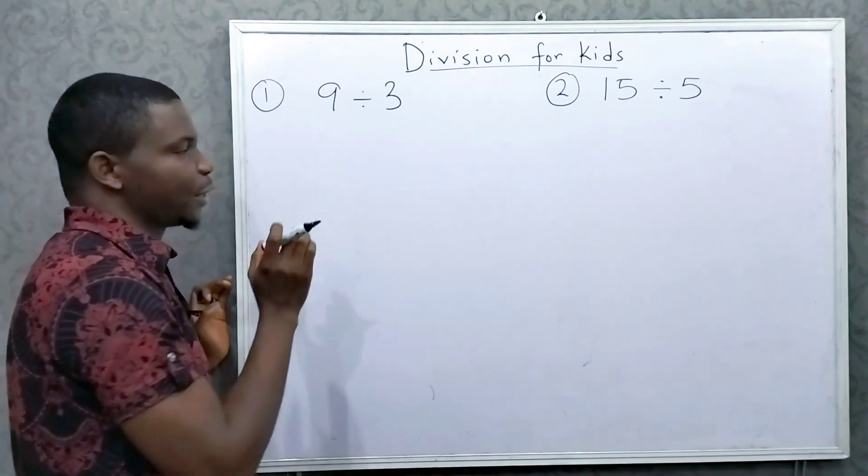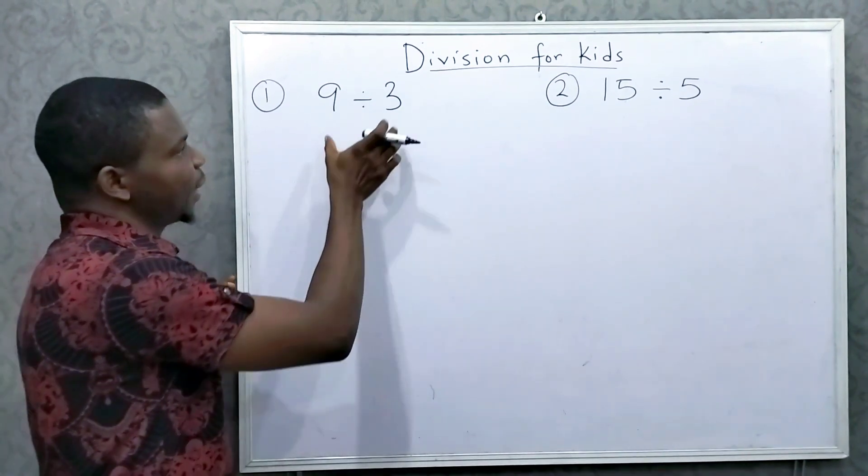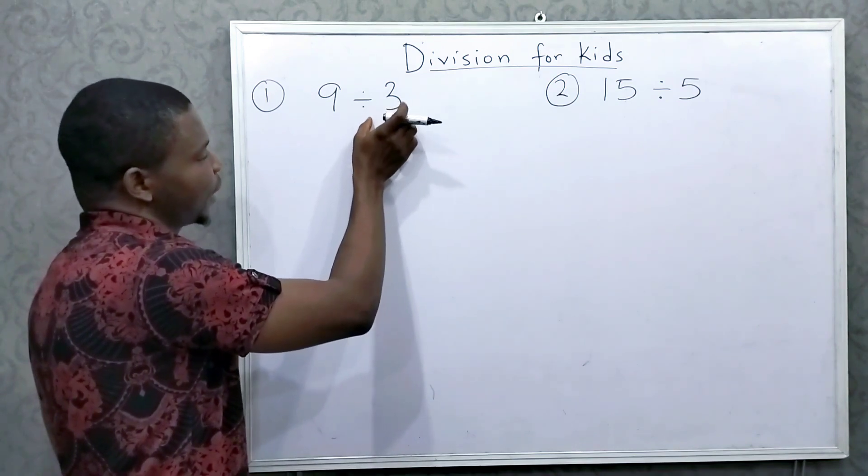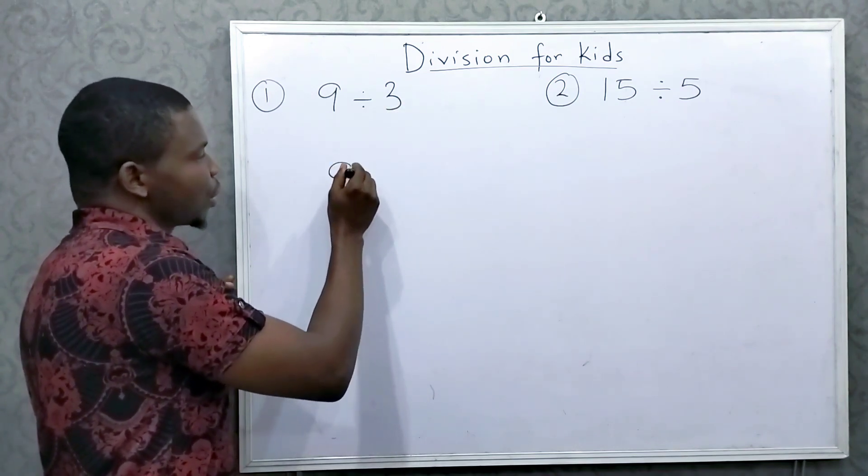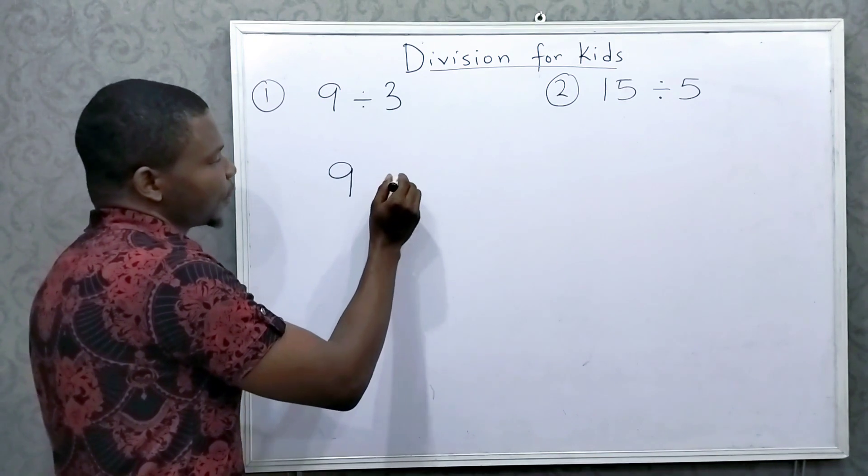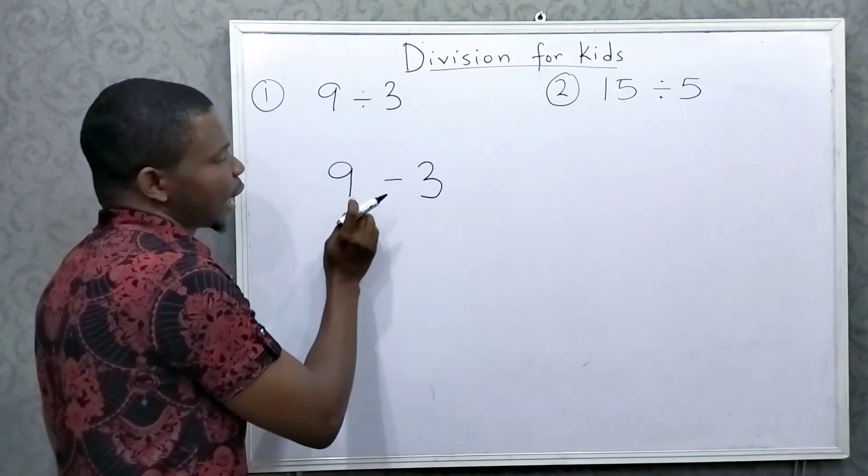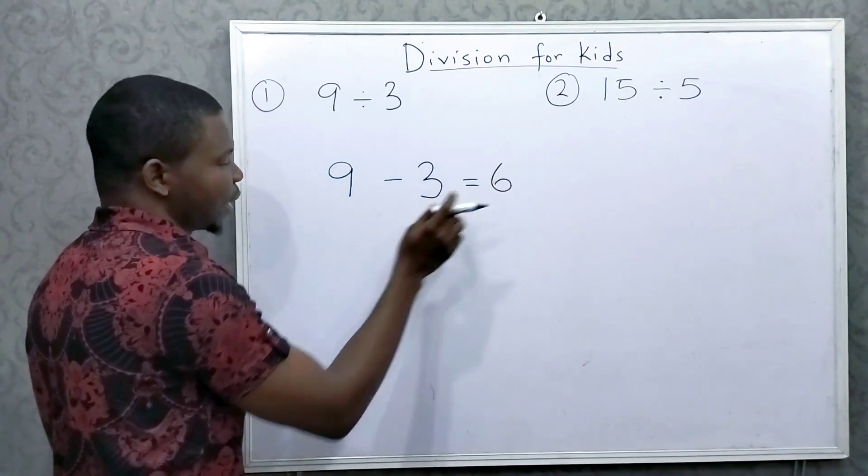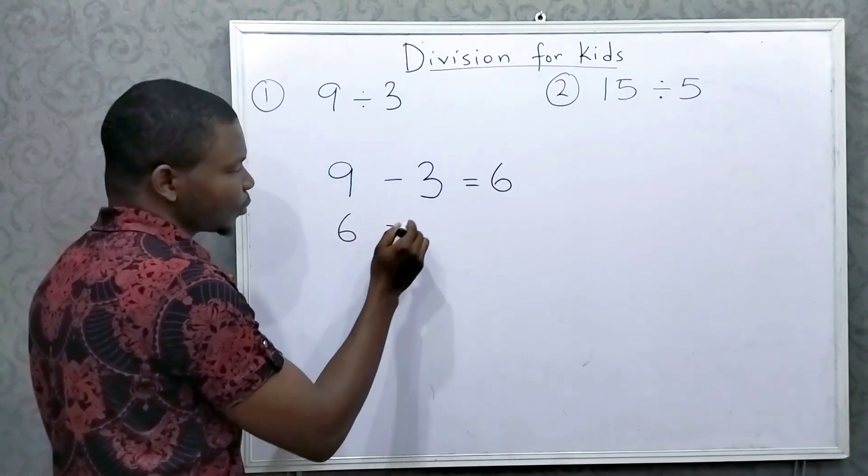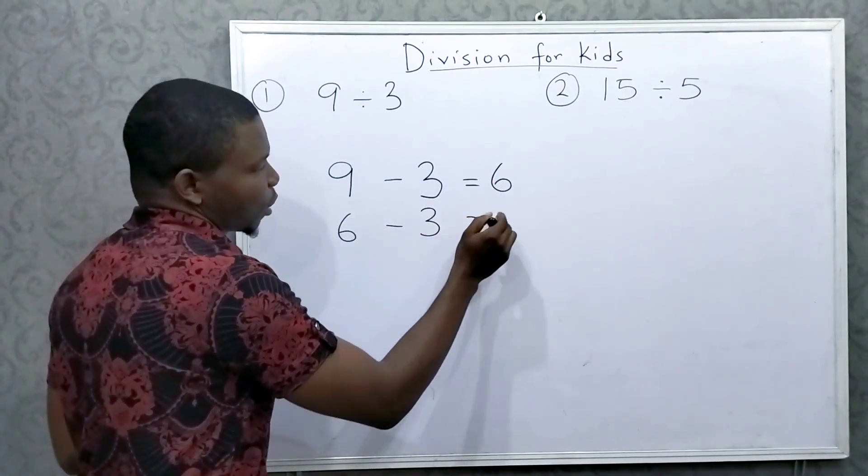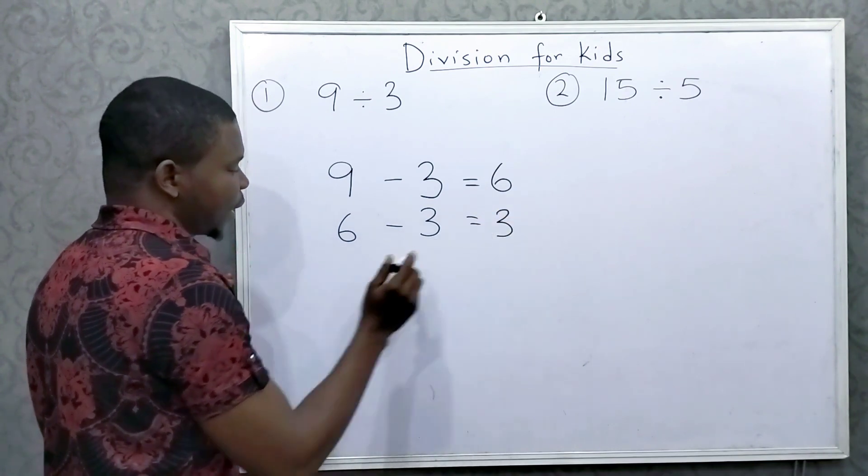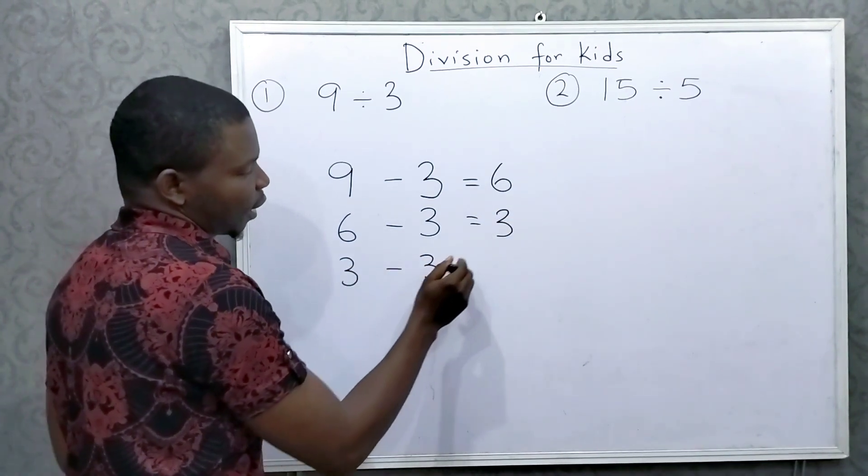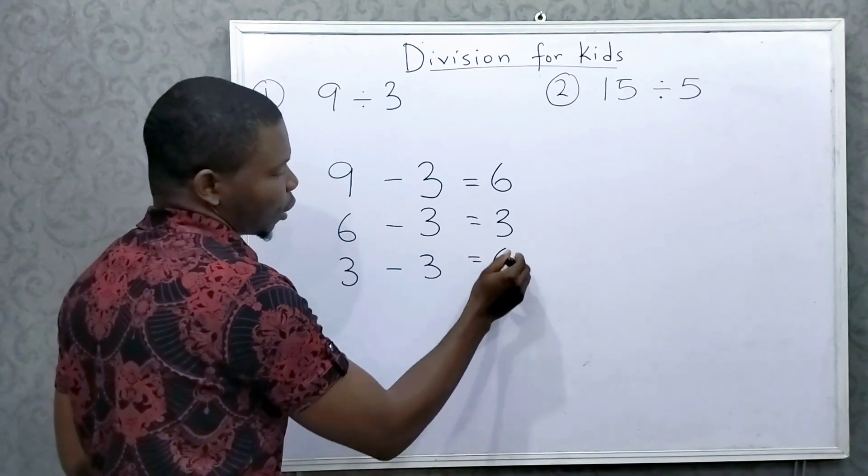So I'm going to use the idea of repeated subtraction to explain 9 divided by 3. So I'll continue subtracting 3 repeatedly. 9 minus 3 is equal to 6. Then I'll say 6 minus 3. This is equal to 3, right? Then I'll say 3 minus 3 is equal to 0.